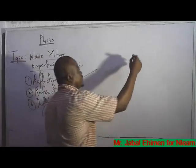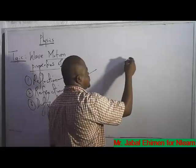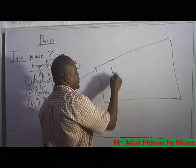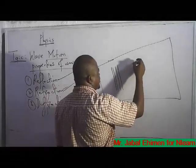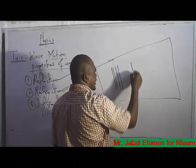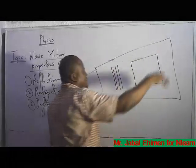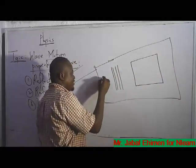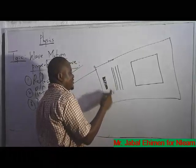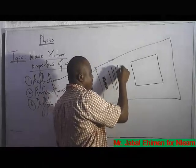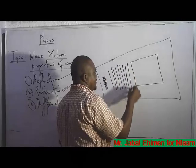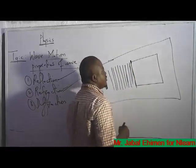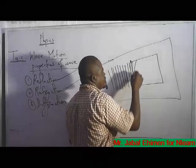For example, consider a ripple tank — a big pan filled with water. Wave is coming from one direction, and you place a glass on one side of the pan. You create a wave with a disturbance. As the wave moves and reaches the boundary where the glass is, something will happen — the wave will change direction.